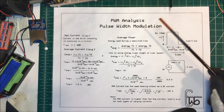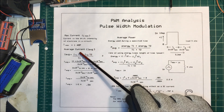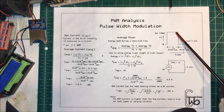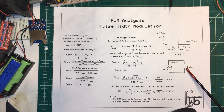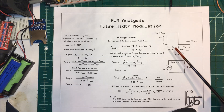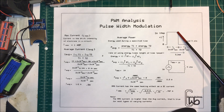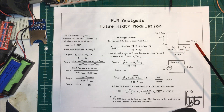Let's talk about PWM, pulse width modulation. We're going to find our average current, average power, and our RMS current. Here's our first pulse — it's five volts into a five ohm load, so the max current is going to be one amp. The time on equals time off: a 50% duty cycle.